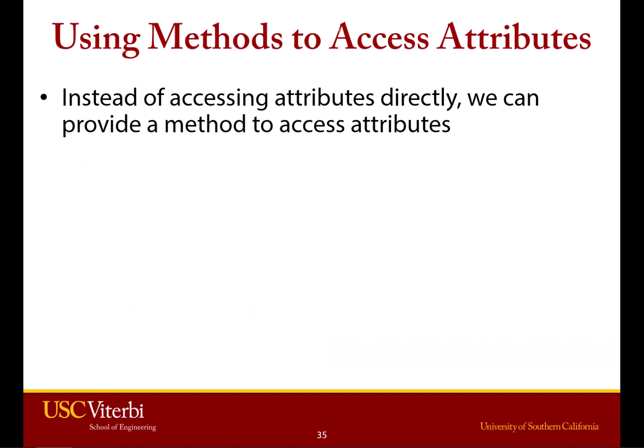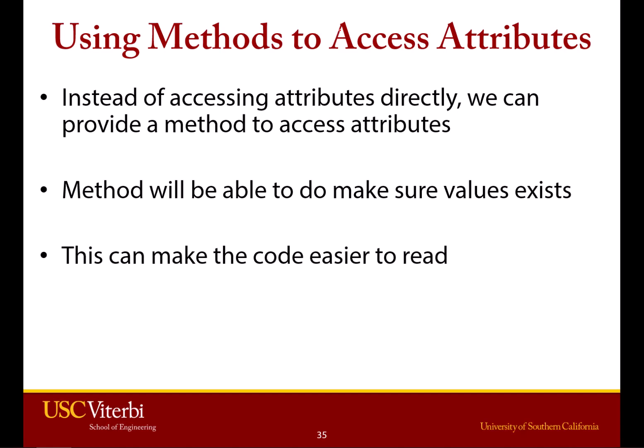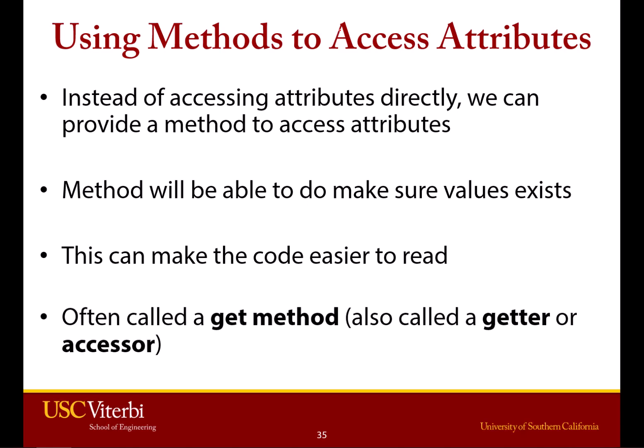So what we could do is instead of accessing the list directly, we could provide a method that allows us to process and get that data, and it also prevents crashing. This makes sure the values exist, makes our code easier to read, and more self-explanatory. These methods are often called a get method, or a getter, or an accessor, because you are getting a value.